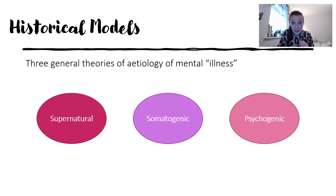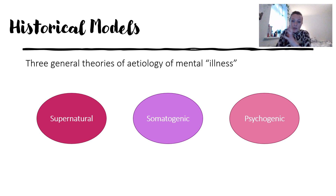Jumping to the 20th century: Freud and Jung, from the psychodynamic and psychoanalytic school of thought, argued that internal psychological conflicts cause mental illness or distress. That was the psychological side of things.